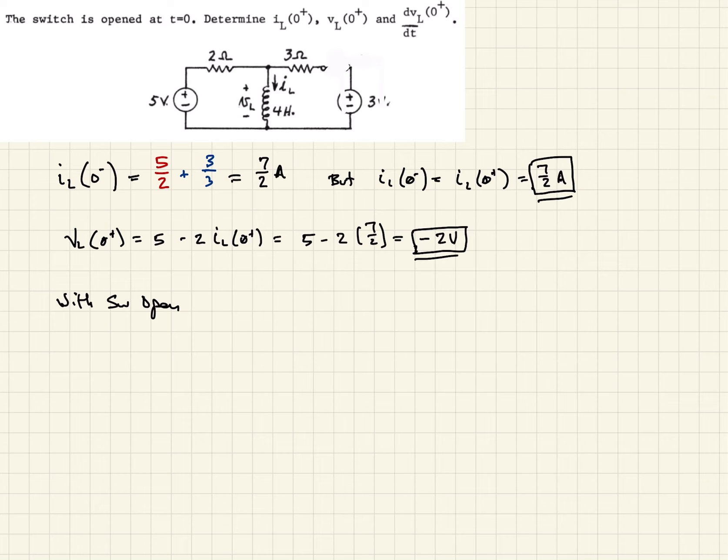And so that would be around this loop here. And so when we do that, what we have is, of course, our voltage source. And so that's going to be 5, and that's going to equal all the voltage drops.